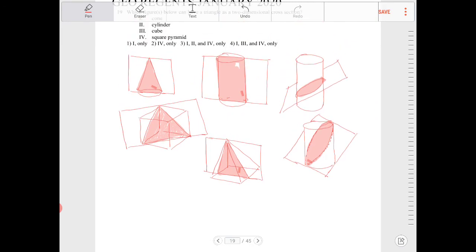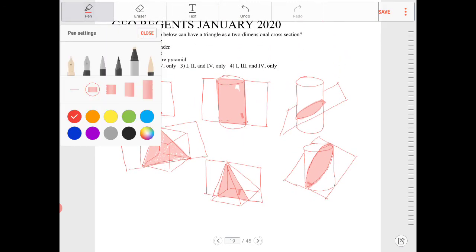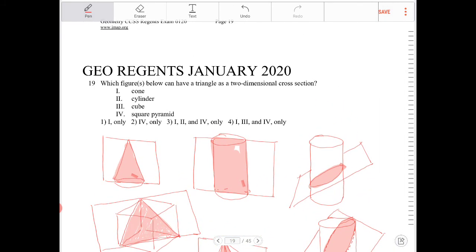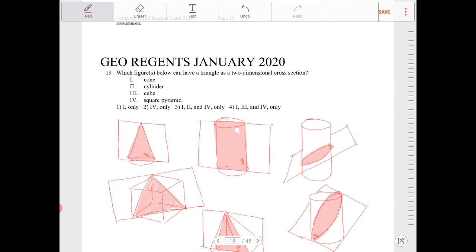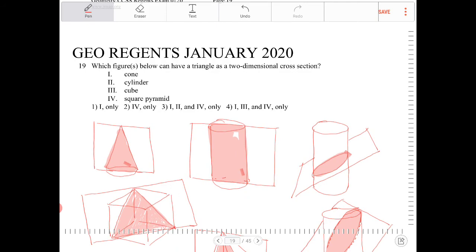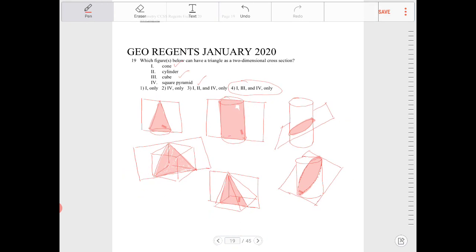Okay? So, to answer this question, which figures below can have a triangle as a two-dimensional cross-section? Looking at this, it's going to be the cube, the cone, and the pyramid. Do they have such an option there? So it's one, three, and four. That would be option four there. Okay.